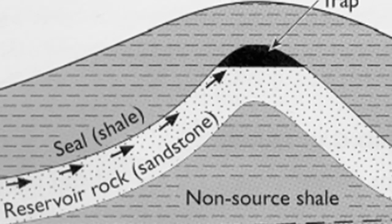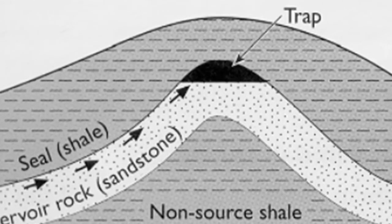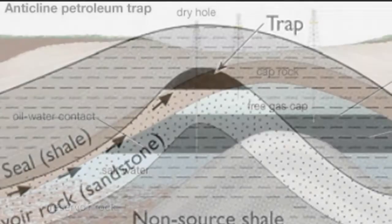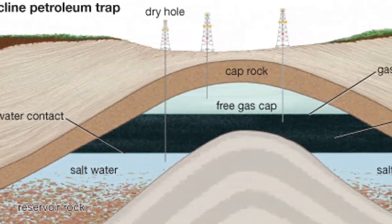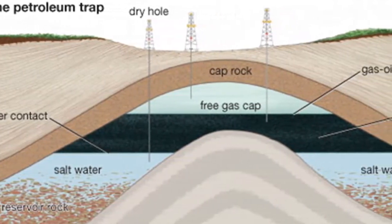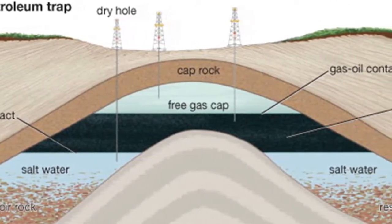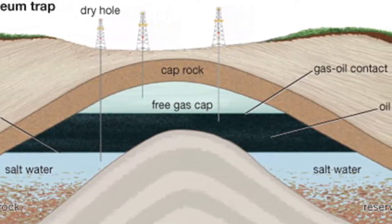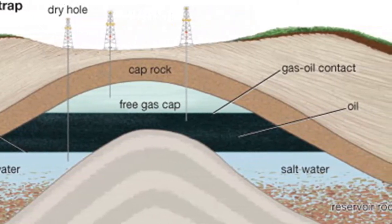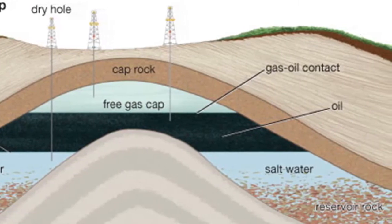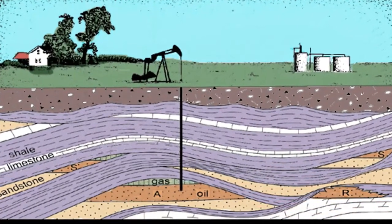One of the simplest traps is an anticline, a folded up-arching series of sedimentary strata. As the strata are bent, the rising oil and gas collect at the apex or top of the fold. Because of its lower density, the natural gas collects above the oil. Both rest upon the denser water that saturates the reservoir rock.